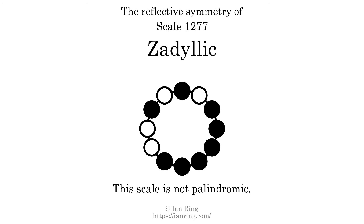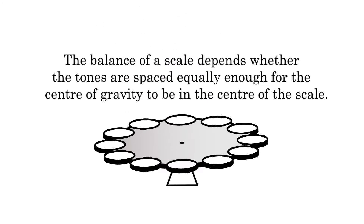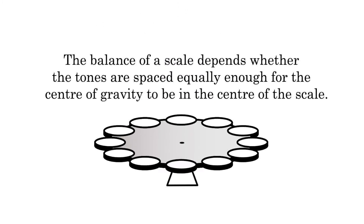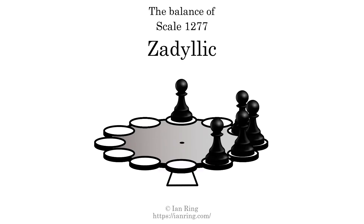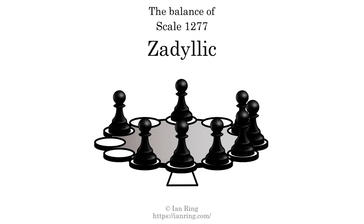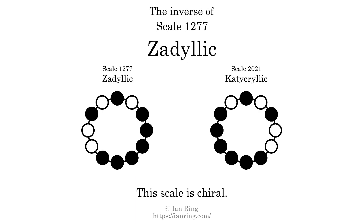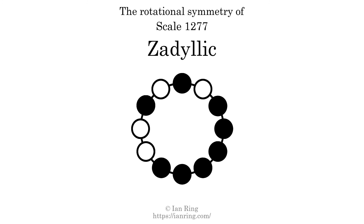This scale has no reflective symmetry. This scale has a different pattern of intervals ascending and descending, so it is not palindromic. This scale has no ridge tones. The balance of a scale depends whether the tones are spaced equally enough for the center of gravity to be in the center of the scale. This scale is not balanced. The inverse of this scale is scale 2021, also known as catacrylic. This scale is chiral — it cannot transform into its inverse by rotational transformation. This scale has no rotational symmetry.